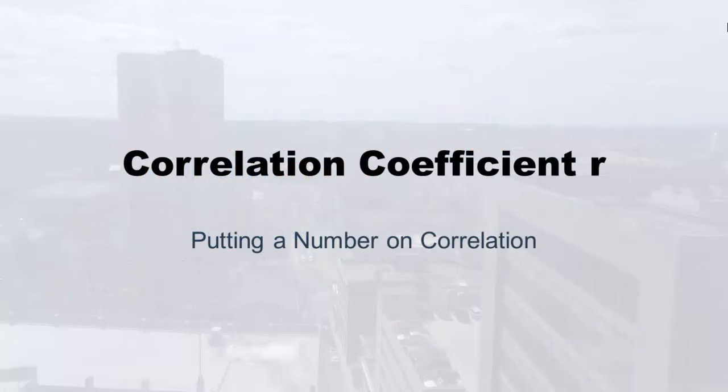Now we're going to get on to correlation coefficient r — to computation and actually making a number. So you can not just use watery terms like direction, positive, negative, or moderate, strong, weak to explain it, but you can actually put a number on how correlated x and y are.